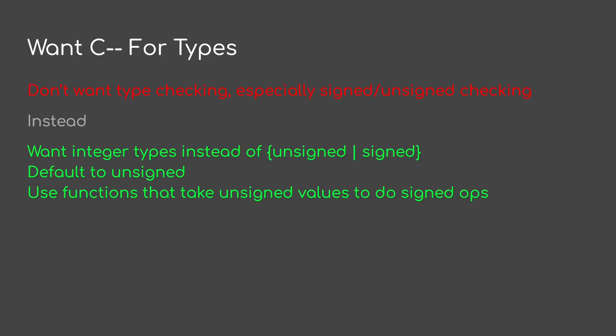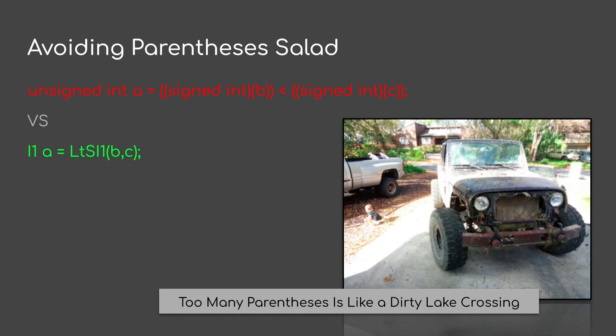I prefer to have something like C-minus-minus for types. I don't want type checking, especially signed-unsigned checking. Instead, I want integer types. I want them to default to unsigned behavior. And I'll use functions that take unsigned values to do signed ops when I need to. I prefer to avoid the parentheses salad. There are a lot of ways you can write something — the easy way or the standard way. It looks kind of busy to me. I prefer something smaller, something more concise.